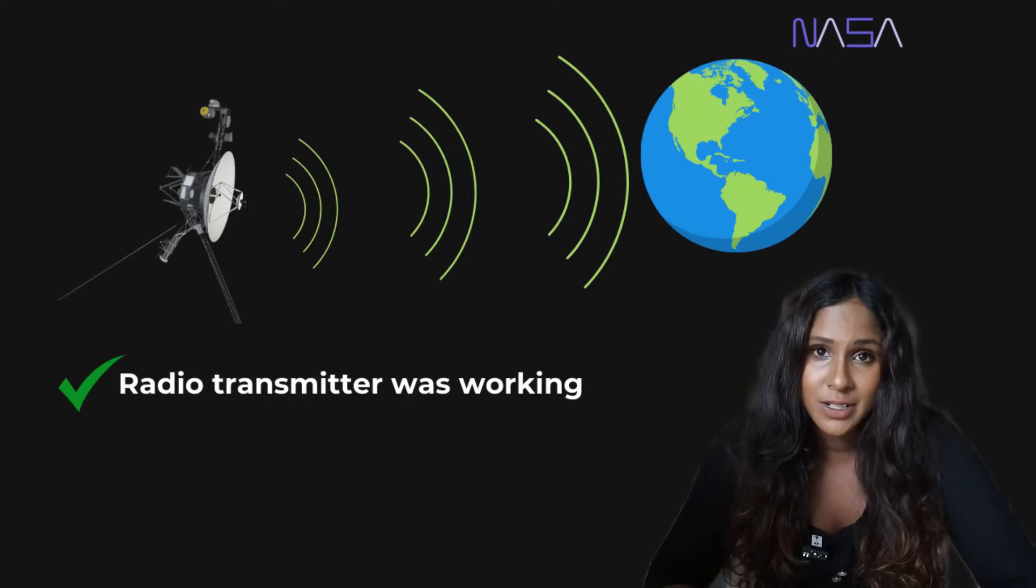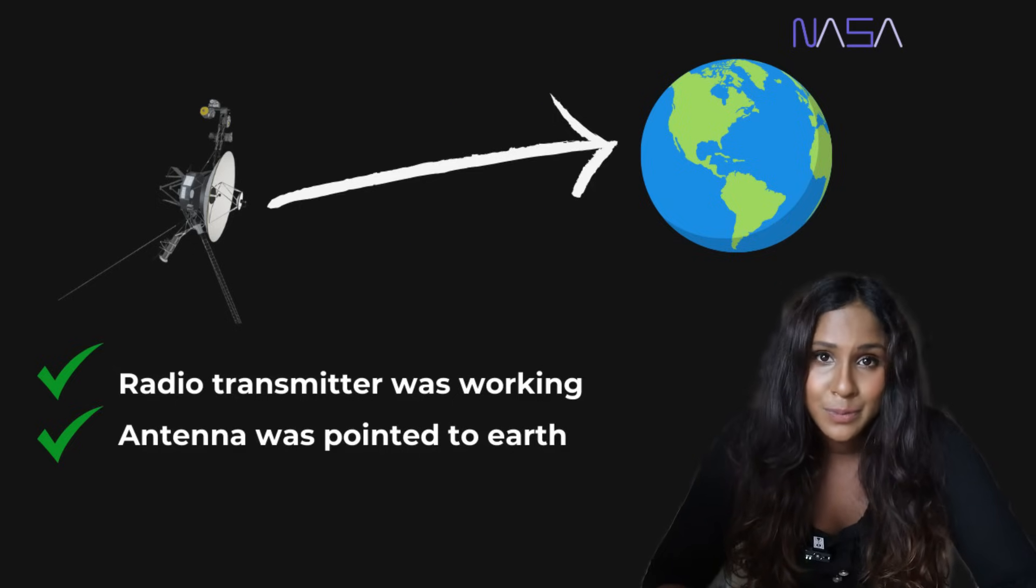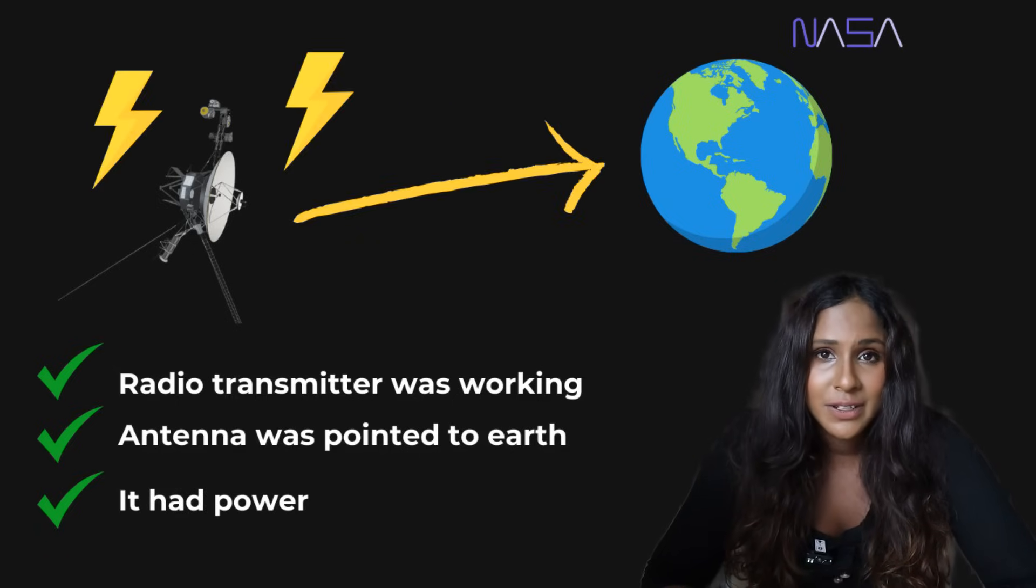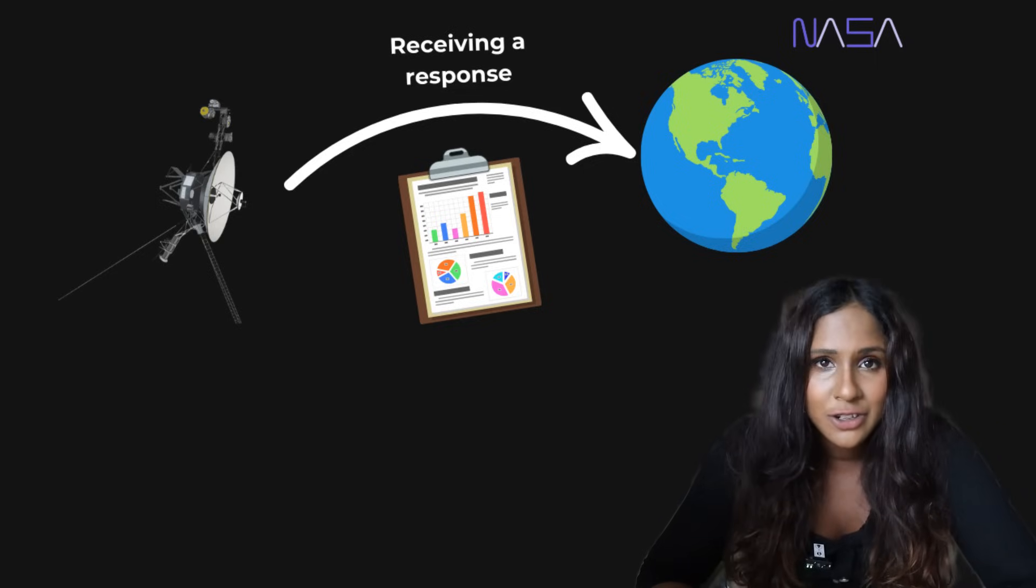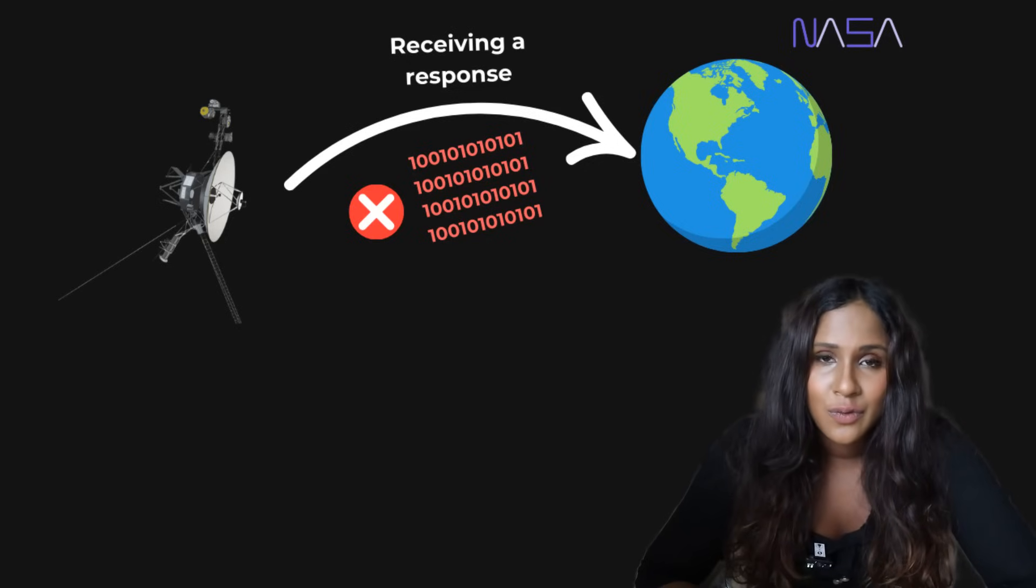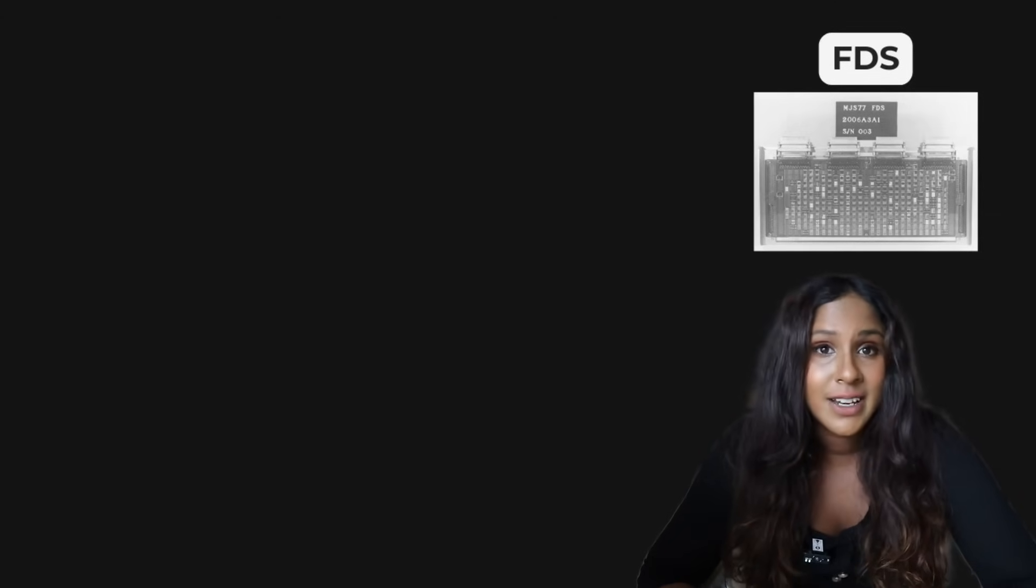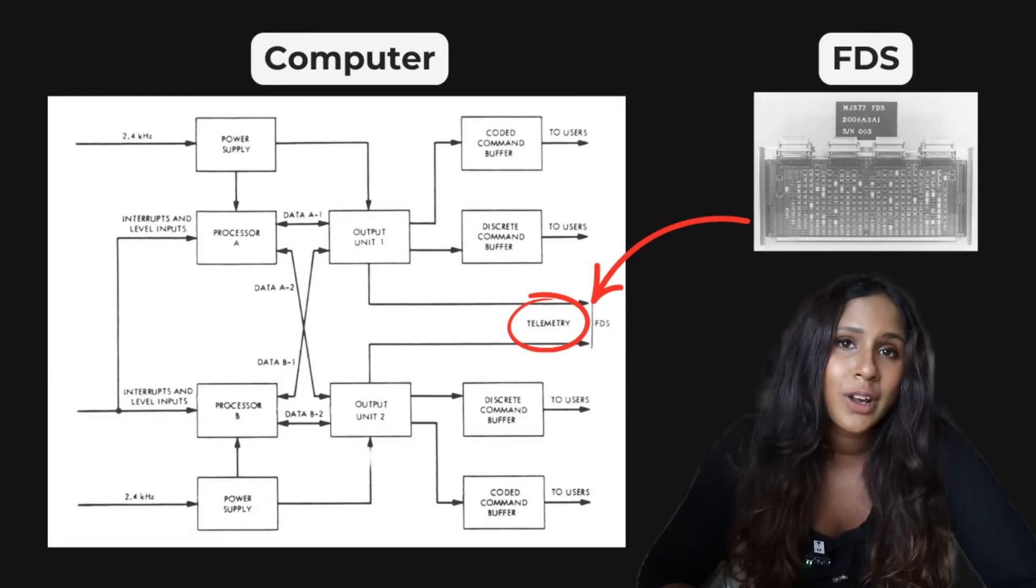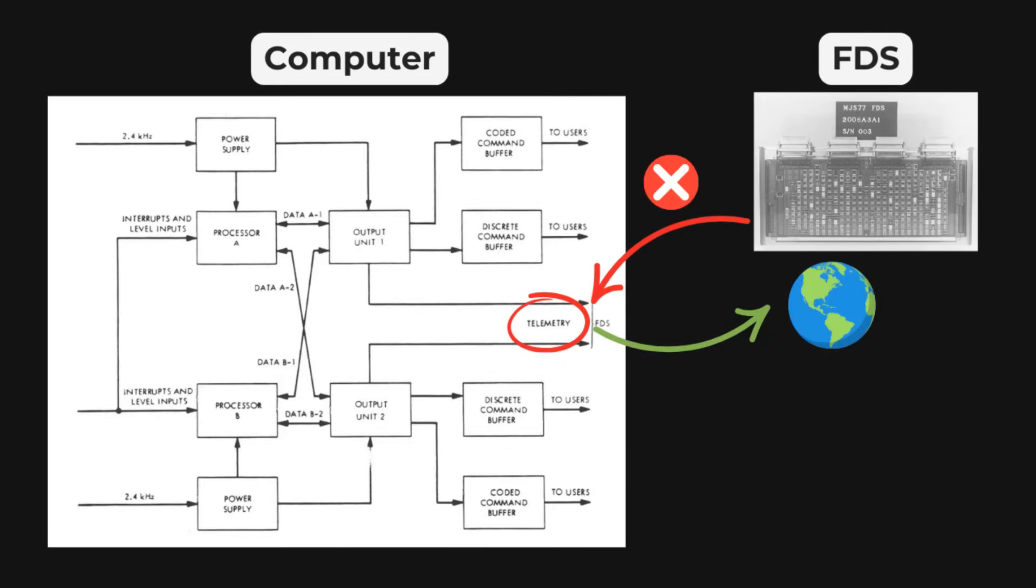And this told engineers a few things. One was that the radio transmitter was working. Two was that the antenna was correctly pointed to Earth. And three was that the spacecraft had power. But instead of it sending back meaningful information, they know that the signal was just sending repeating patterns of ones and zeros, almost like it was stuck. So this suggested that the part responsible for the data transmission, the flight data subsystem, wasn't actually talking properly to the telemetry modulation unit, which sends data to Earth.